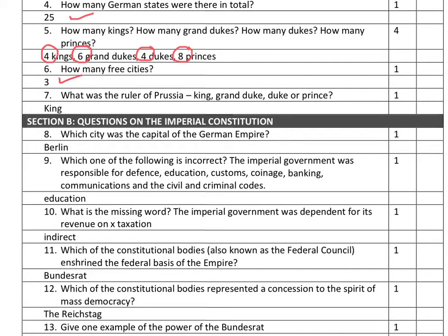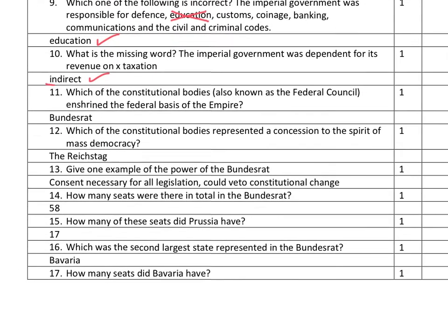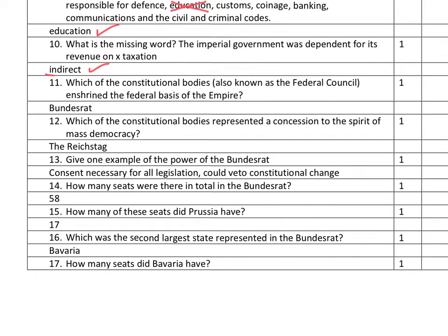Question seven: the ruler of Prussia was obviously the king. Question eight: Berlin was obviously the capital of Prussia and also the capital of the German Empire. Question nine: which one of the following is incorrect? The one that was not a responsibility of the imperial government was education. Question ten: the missing word — the imperial government was dependent for its revenue on indirect taxation. Some of you put things like trade or VAT; I was actually looking for indirect taxation.